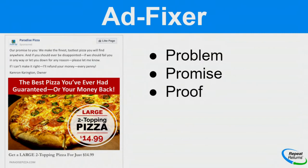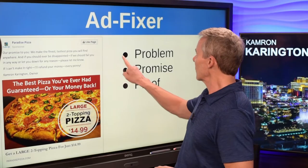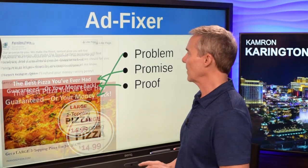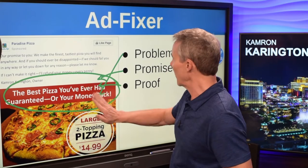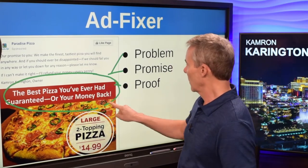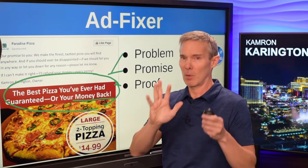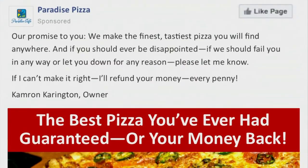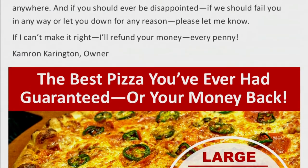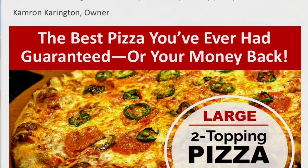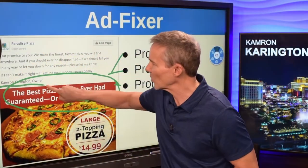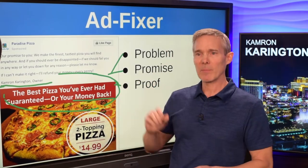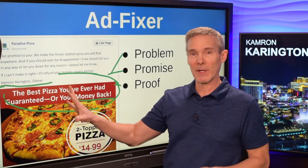The third part of the persuasion equation is to add proof. We've addressed the problem, we've said 'best pizza you've ever had,' but now we've amplified this promise: 'The best pizza you've ever had or your money back.' That's what we call proof — who could say that if the pizza wasn't good? We further enhance this with copy: 'We make the finest, tastiest pizza you'll find anywhere. Should you ever be disappointed, if we fail or let you down for any reason, please let me know. If I can't make it right, I'll refund your money — every penny. Cameron Carrington, owner.' So now we've addressed the problem, said it's really good pizza, and we're proving it with this strong guarantee.